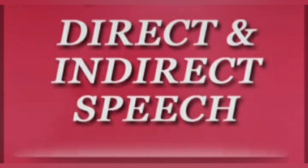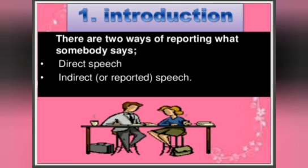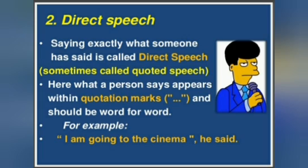There are two ways of reporting what somebody says. One is direct speech and the other one is indirect speech. Direct speech is saying exactly what someone has said. It is sometimes called quoted speech. What a person says appears within double inverted commas, or quotation marks, and it should be word for word. For example: 'I am going to the cinema,' he said.